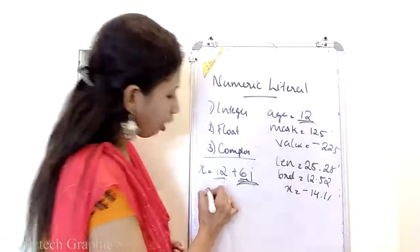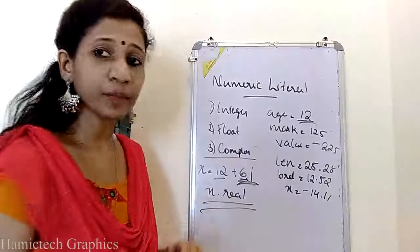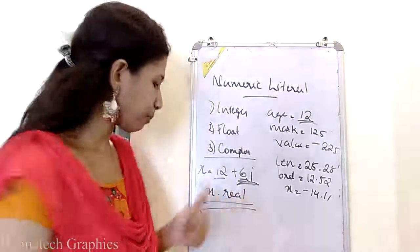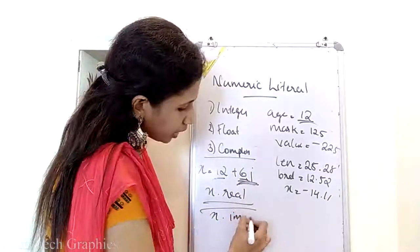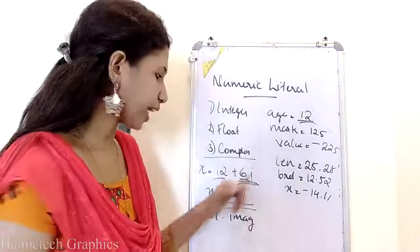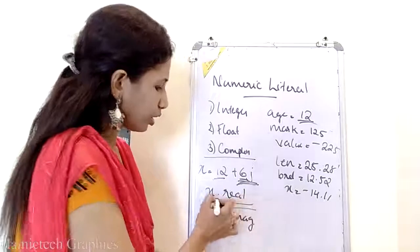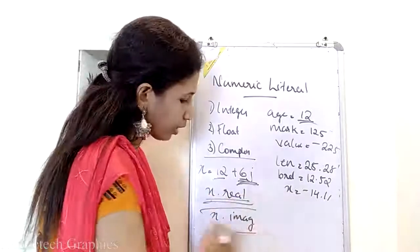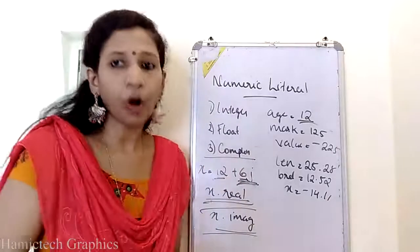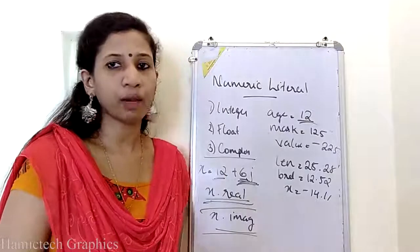x.real is the function used for getting the real part of the complex number. x.imag can be used for getting the imaginary part of the number. So, .real and .imag — these two functions are used in complex numbers for getting the real part as well as the imaginary part.